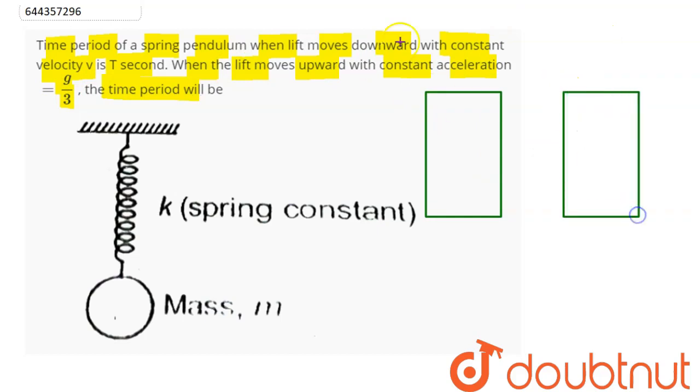In one case, it says the lift here is moving downward with constant velocity. So we can say here velocity is constant, which implies acceleration is zero. So we can see here this is our spring pendulum.